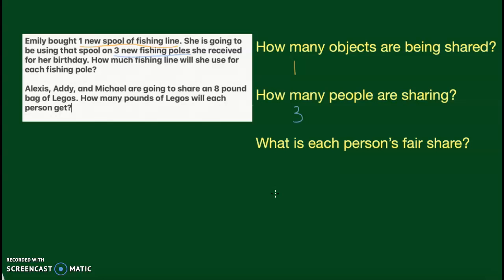So the question is how much line will she use for each fishing pole? Now this video is a little bit different from the last one because they want to include a number model with this. And a number model is basically another way of saying a math problem. So when we're doing problems like this, we're dividing up the objects being shared. So we're going to have a division problem here. And the one object being shared is the dividend. That's what's being divided. Then what's it being divided by? In this case it's being divided between the three fishing poles. So we're going to have one divided by three.